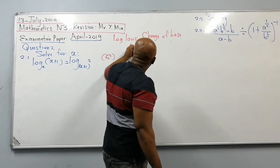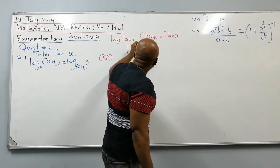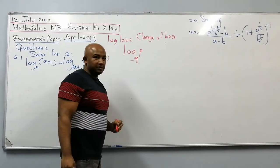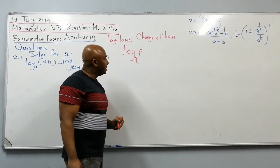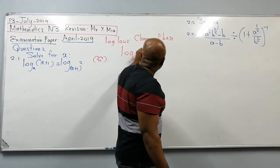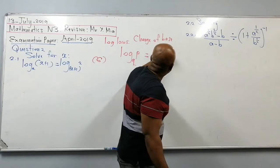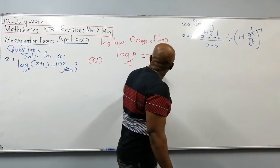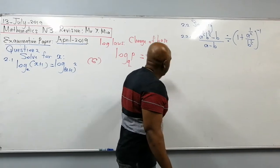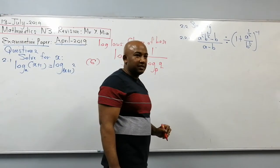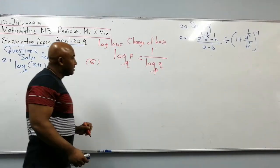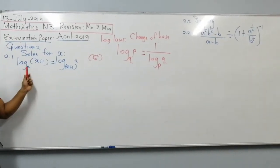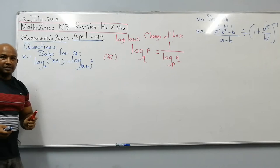We'll use the change of base log rule: log of p to the base q equals 1 divided by log of q to the base p. I'll use this law to make the bases the same. I can choose to change either term — let me change the second one.